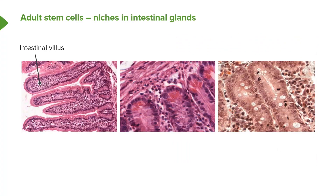Sometimes glands secrete cells. They house stem cells, and the product of these glands are other cells to replace cells higher up in epithelial surfaces — above where the glands are. They don't produce proteins or mucus; they produce other cells.